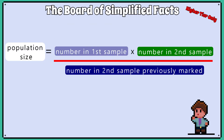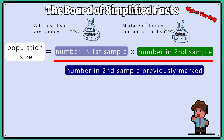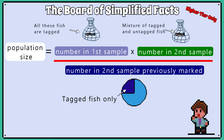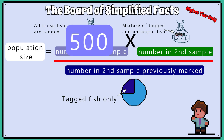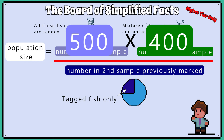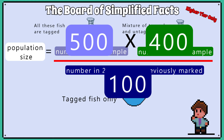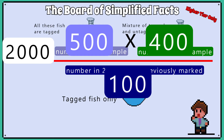We then use this equation, which is provided to you in the exam — you do not need to remember it. Population size equals the number in the first sample multiplied by the number in the second sample, divided by the number in the second sample that were previously marked. So: 500 multiplied by 400 divided by 100, which gives an answer of 2,000 fish.